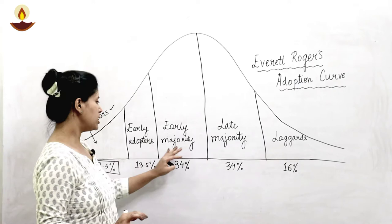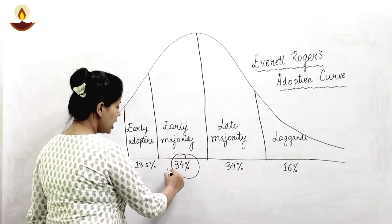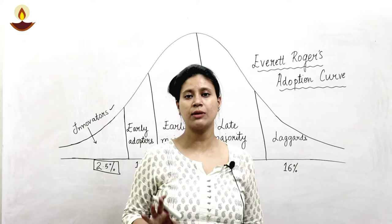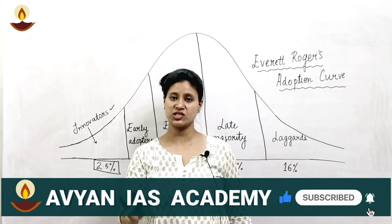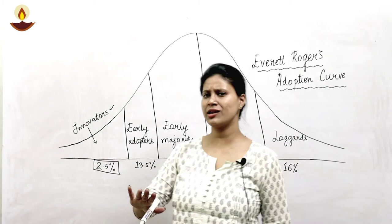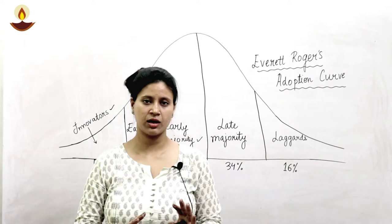Then our Early Majority — this ratio is 34%. Early Majorities are those when a product has established itself well in the market. That means when it has proven recommendations, that yes, this product is good, this technology is good, or this innovation is worth investing in. Then Early Majorities invest. They are moderate at taking risks. When it is literally proved that this product is worthy enough, these 34% consumers purchase or adopt.